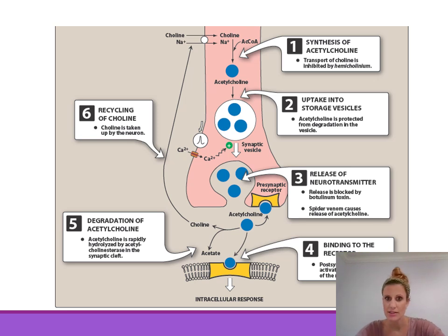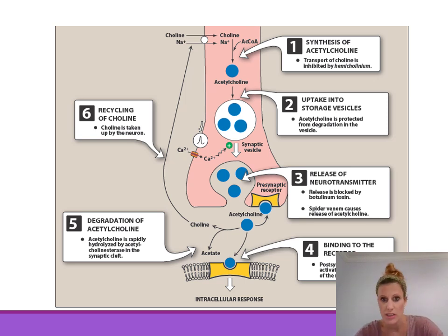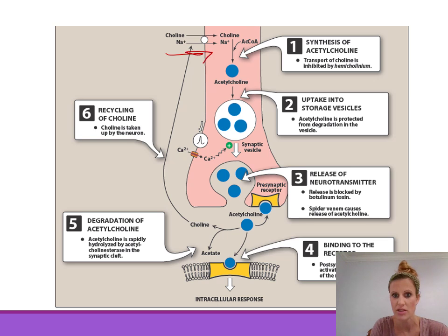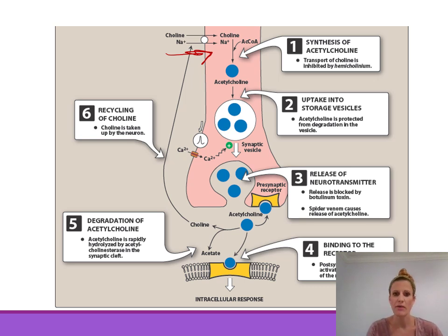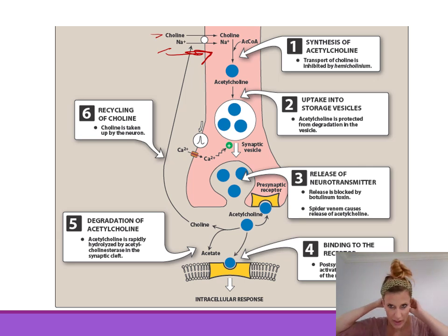Here are the six steps involved in the production, release, breakdown, and recycling of acetylcholine — the whole life cycle. The synthesis of acetylcholine requires acetyl-CoA and choline. Choline is taken up into the neuron by a co-transporter that transports choline and sodium into the neuron. This is the rate-limiting step in the production of acetylcholine. This transport is inhibited by hemicholinium, which is used in research but not prescribed clinically.